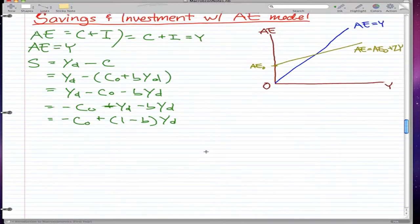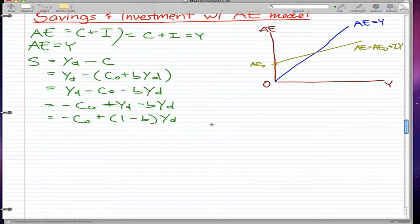And with further assumption that Y, that we have no taxes, so YD will equal to pretty much our income. And that's when there are no taxes, when T equals zero.